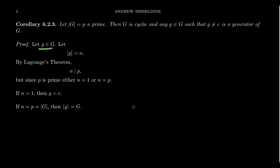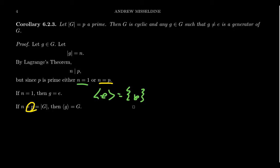Take any element g of G and let its order be N. By Lagrange's Theorem, the order of an element must divide P. But P is prime, so there are only two options: N is either 1 or P. If N equals 1, then g is the identity, and the cyclic subgroup generated by the identity is just the trivial subgroup. If N equals P — which is the order of the whole group — then the cyclic subgroup generated by g must be the whole group, and therefore G is cyclic. Anyone who's not the identity must generate the entire group.